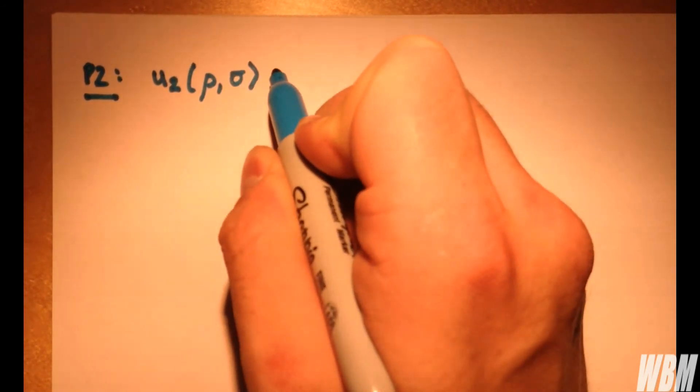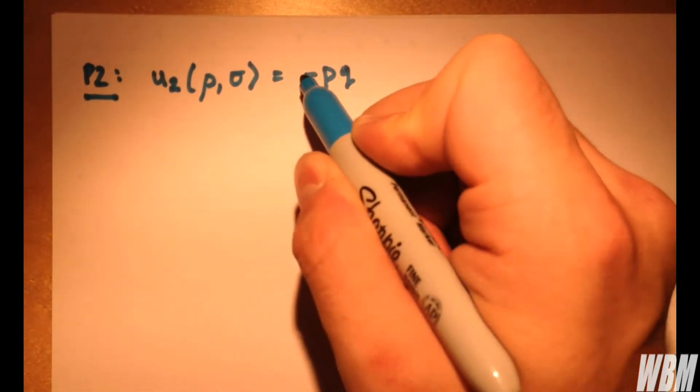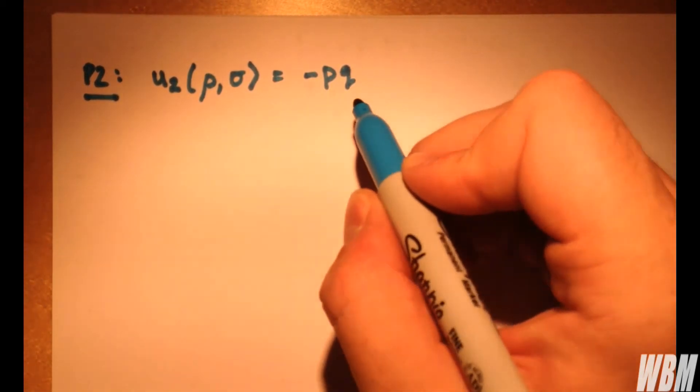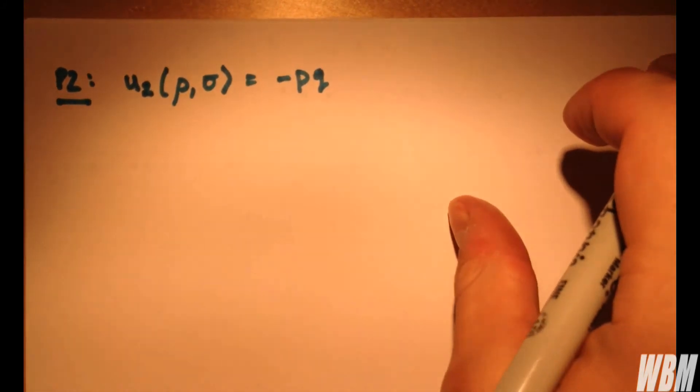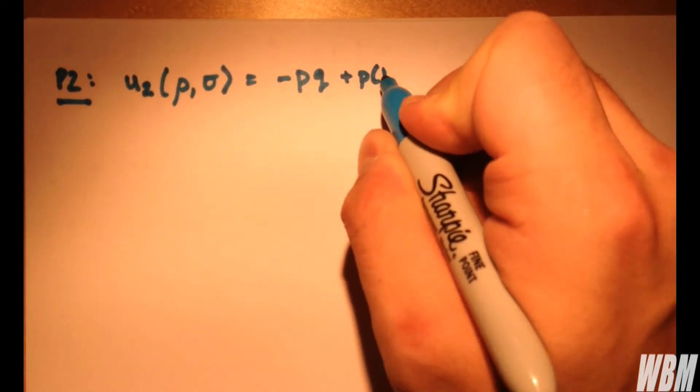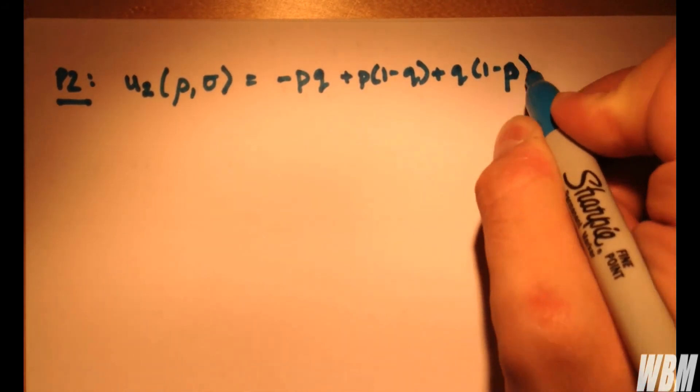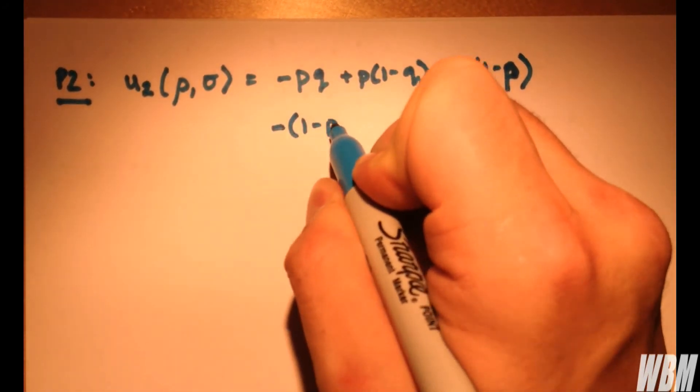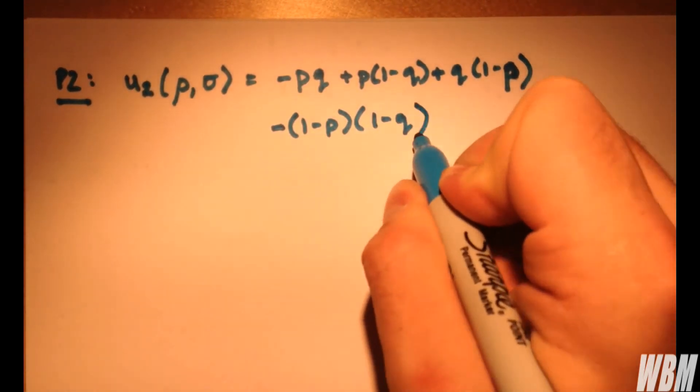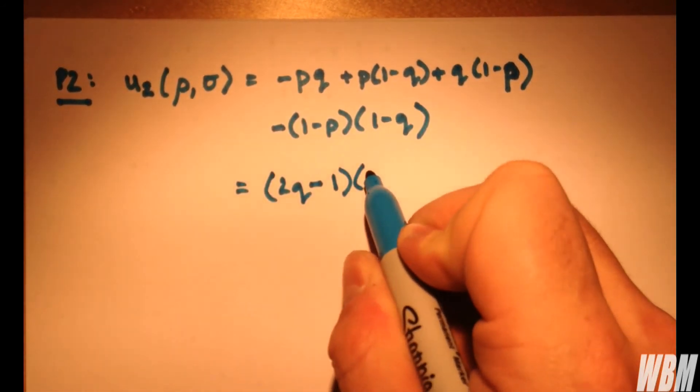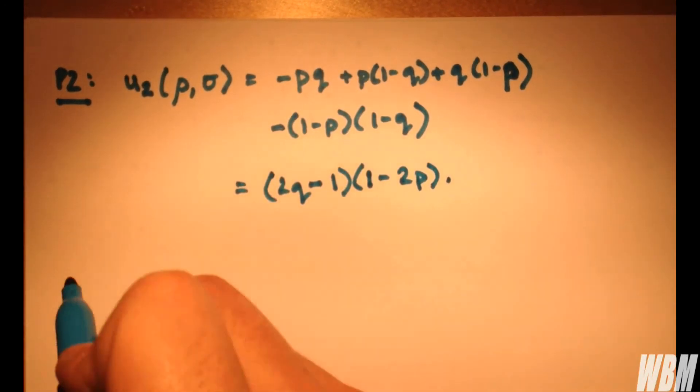So for player two, this is the same as player one but obviously we're going to have different negative and positive values given heads-heads, heads-tails and what player two wanted from the original game. So I'm going to skip a few steps. And once again this factorizes as (2q-1)(1-2p).